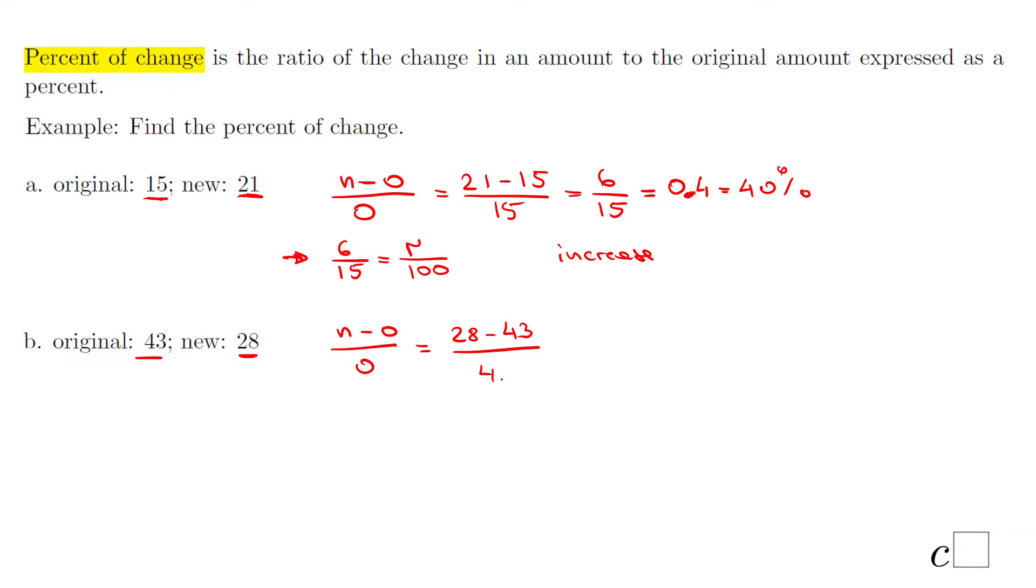We have 28 minus 43 over 43, and that'll be negative 15 over 43. Again, you can use ratios to solve this one if you want. Negative 15 over 43 equals r over 100 and you find r. Or another way is simply do this division: negative 15 divided by 43, which is negative 0.3488. I'm just going to use the first four decimals. That will be good enough. Move the decimal twice and that will give us negative 34.88.